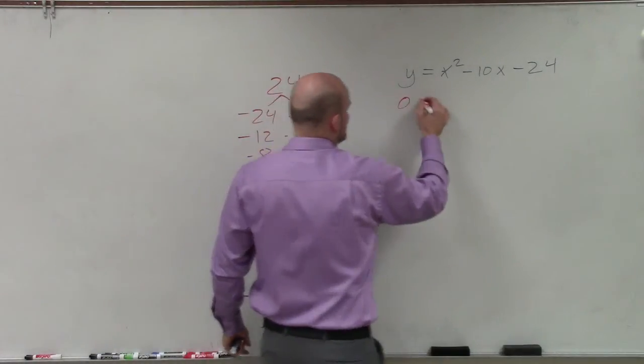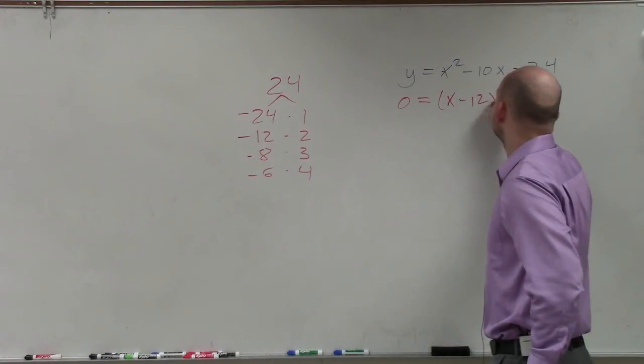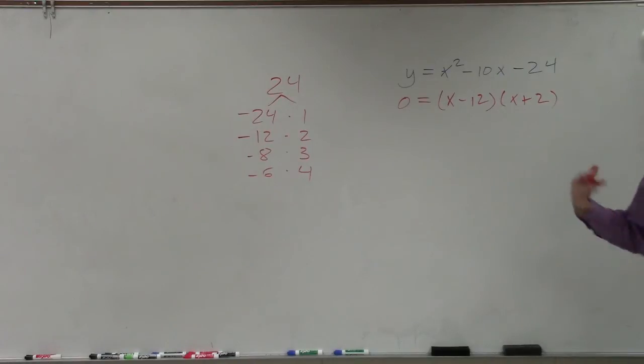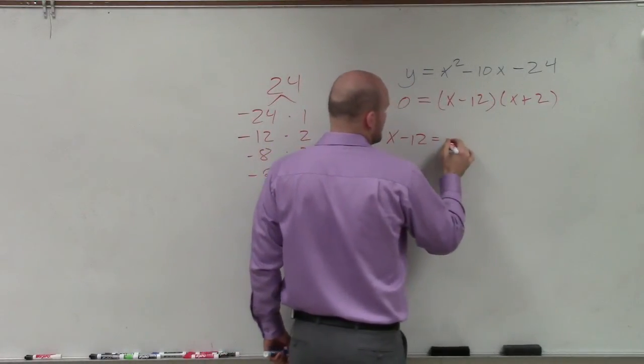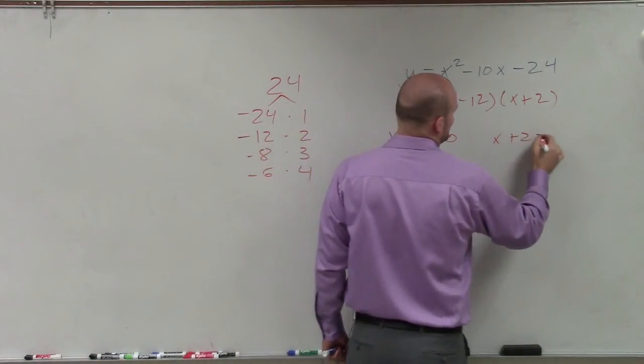So now to solve this, I set it equal to 0. And now I can say that x minus 12 times x plus 2. So I just write my two factors in there. Now I can apply my zero product property.